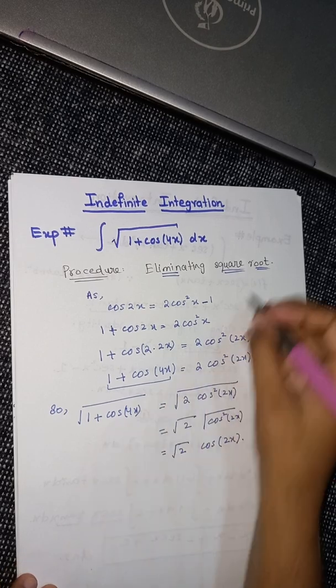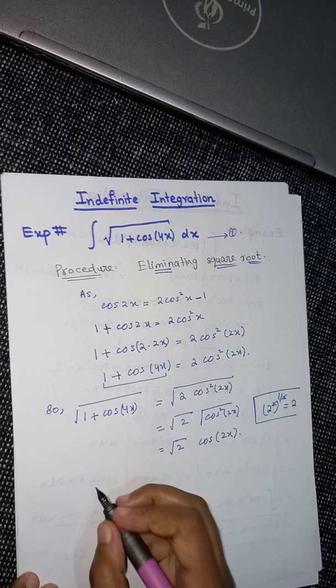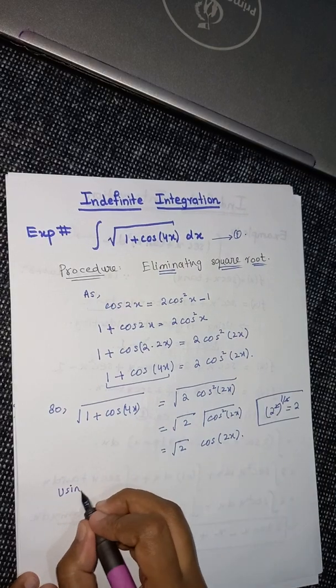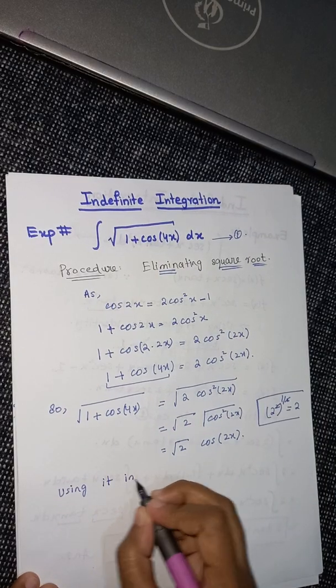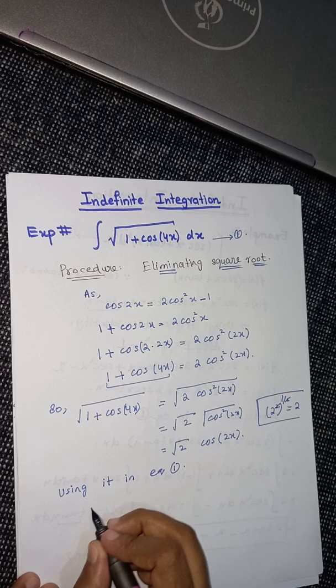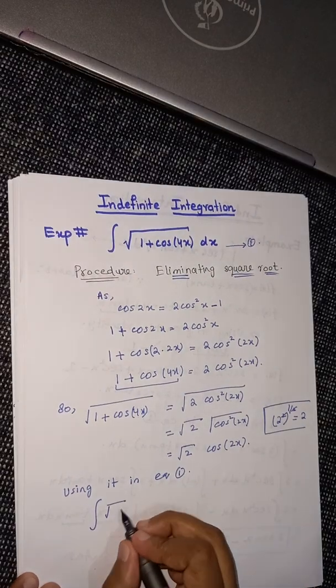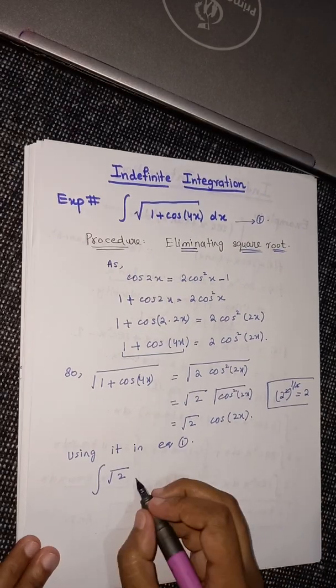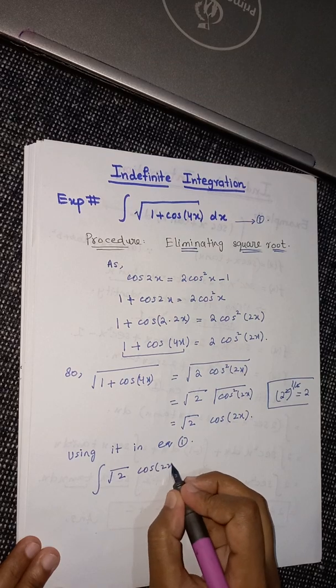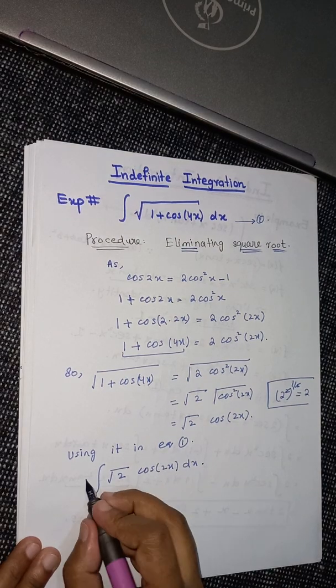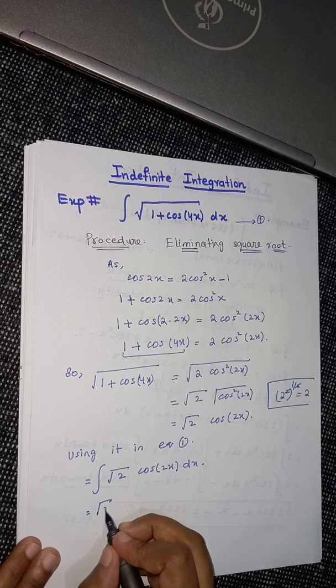Using it in equation number 1, we get integral root 2 cos 2x times dx. Obviously root 2 is a constant, so I will pull it out and we will get cos 2x dx.